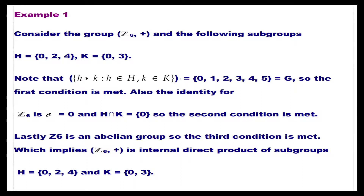Example 1: Consider the group (Z₆, +) with subgroups H = {0, 2, 4} and K = {0, 3}. The set HK = {h + k : h ∈ H, k ∈ K} = {0, 1, 2, 3, 4, 5} = G, so the first condition is met. The identity is e = 0, and H ∩ K = {0}, so the second condition holds. Since Z₆ is abelian, the third condition is met, so (Z₆, +) is the internal direct product of H and K.